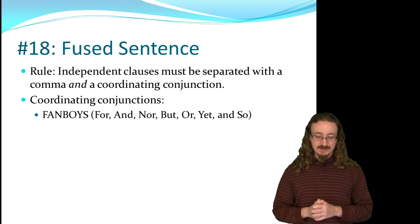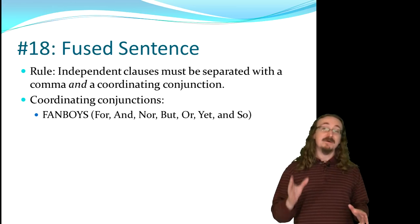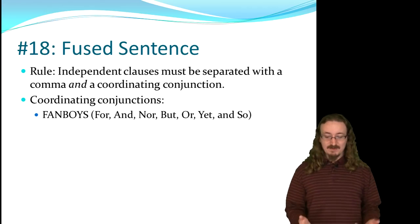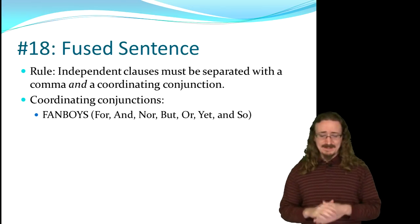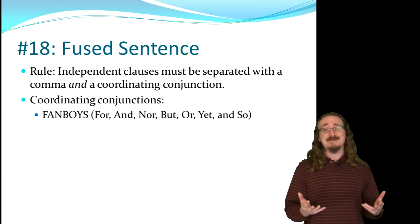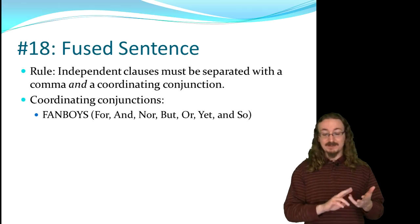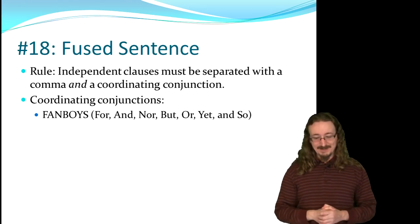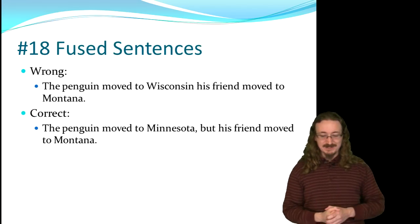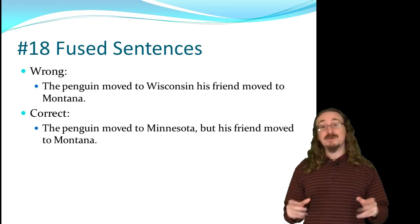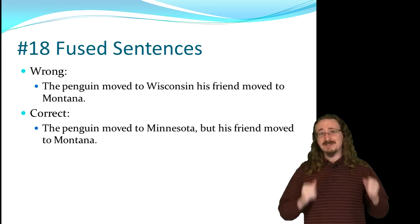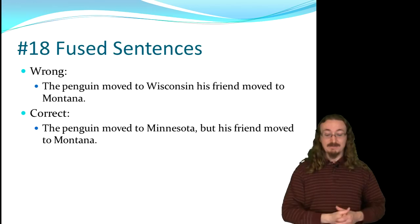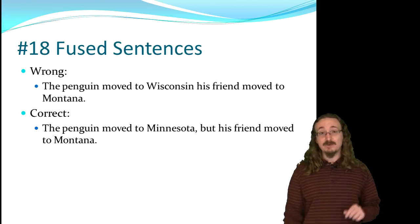Number 18: the fused sentence. Independent clauses must be separated with a comma and a coordinating conjunction. Remember FANBOYS: For, And, Nor, But, Or, Yet, and So. If you can memorize that list, your life will be much easier. Example of a fused sentence: 'The penguin moved to Wisconsin his friend moved to Montana.' Fix it: 'The penguin moved to Minnesota, but his friend moved to Montana' — adding the comma and coordinating conjunction 'but.'